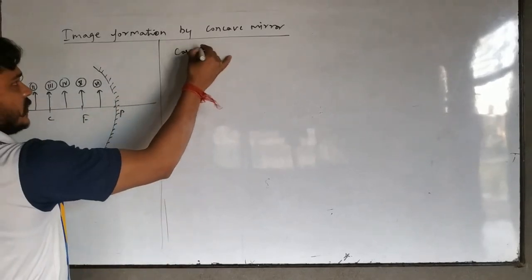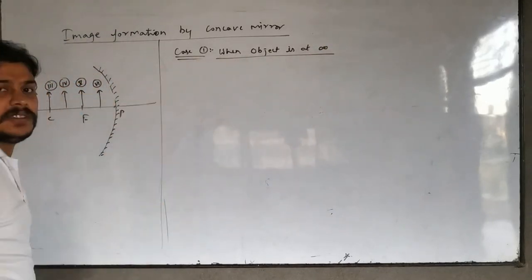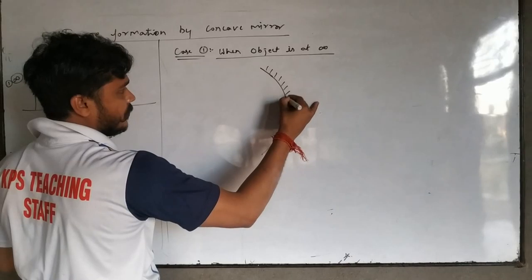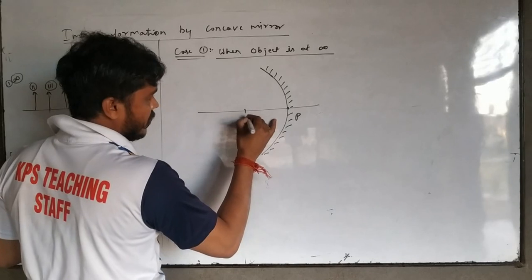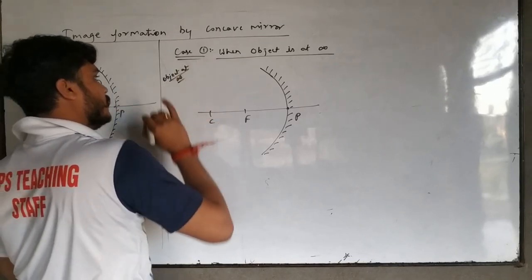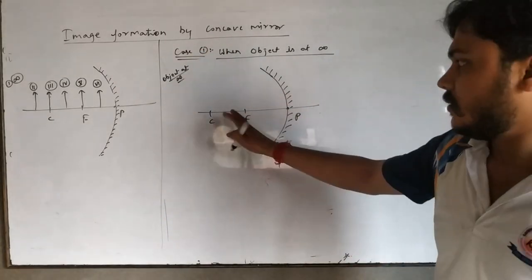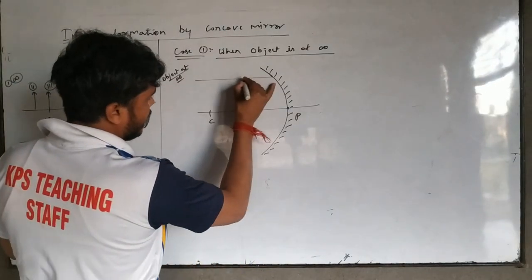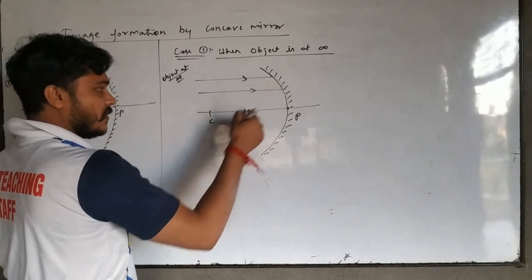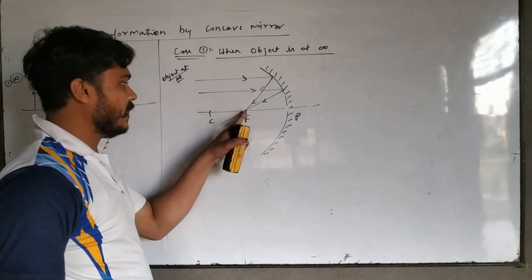We start with Case 1: when the object is at infinity. When the object is at infinity, always parallel rays come in. We have two parallel rays coming from infinity. From Rule 1 of image formation, when a ray is parallel to the principal axis, it passes through the focus after reflection. So the reflected rays meet at the focus point.